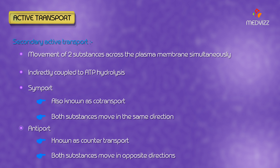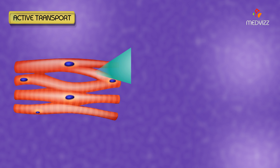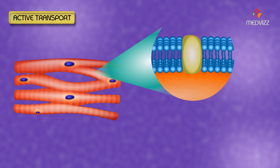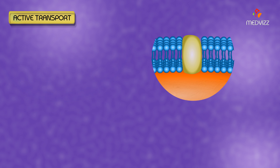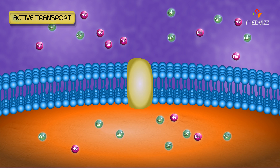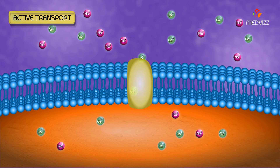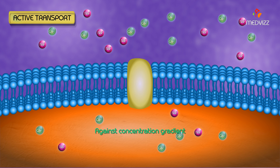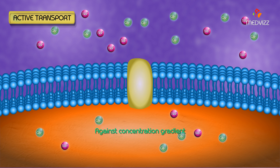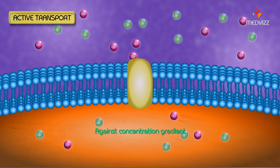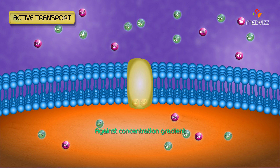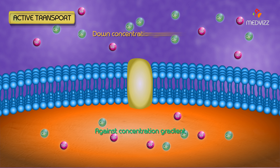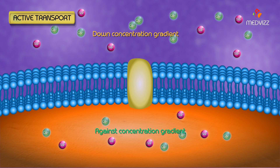Antiport, also known as counter-transport: both substances move in opposite directions. For example, in heart muscle cells, the sodium-calcium counter-transporter moves calcium against its concentration gradient as sodium moves down its concentration gradient.